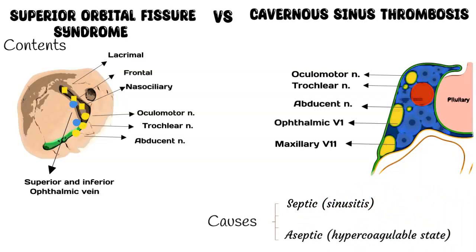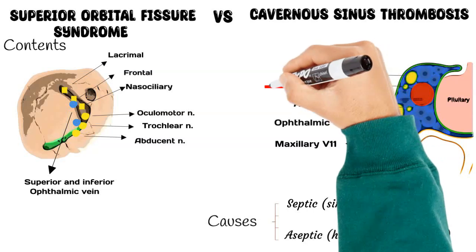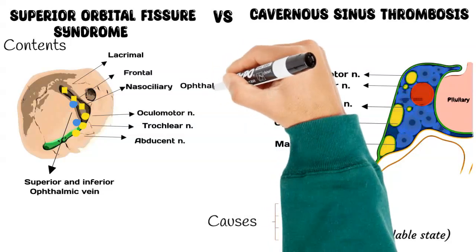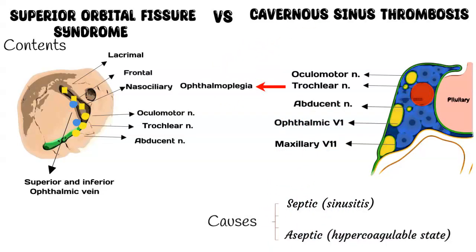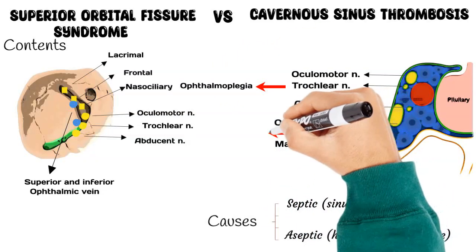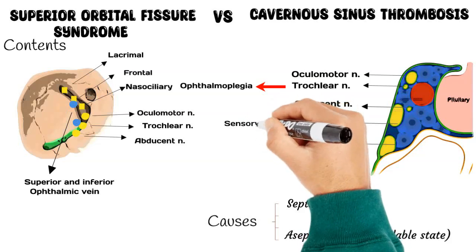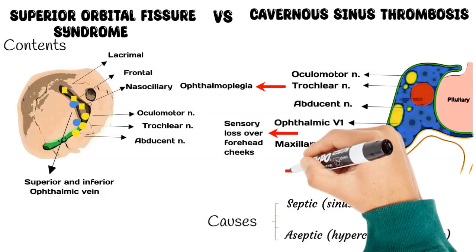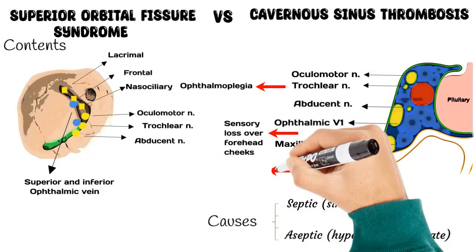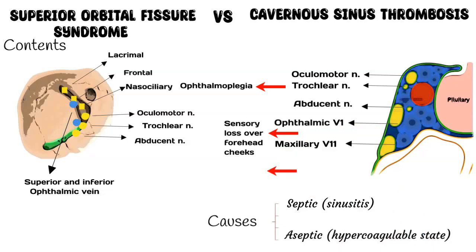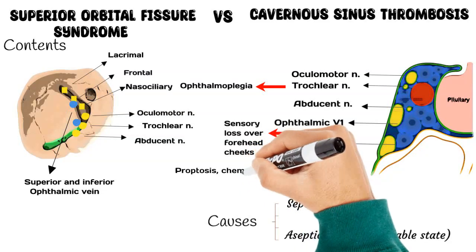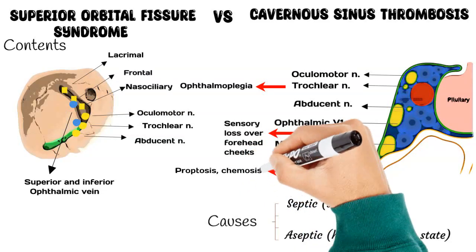This thrombosis will affect the oculomotor nerves, resulting in ophthalmoplegia. There will also be sensory loss over the forehead and cheeks due to loss of function of the ophthalmic and maxillary divisions of the trigeminal nerve. Occlusion of the draining veins from the orbit will also result in proptosis and chemosis.